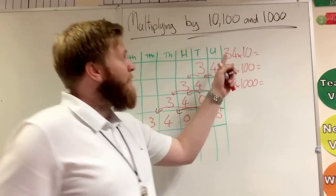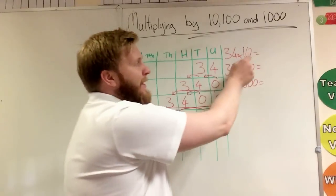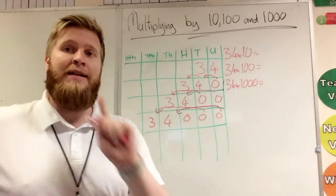Now I'm going to jump straight into it, we've got a number here, 34, and we're going to look at times by ten, a hundred, and a thousand.